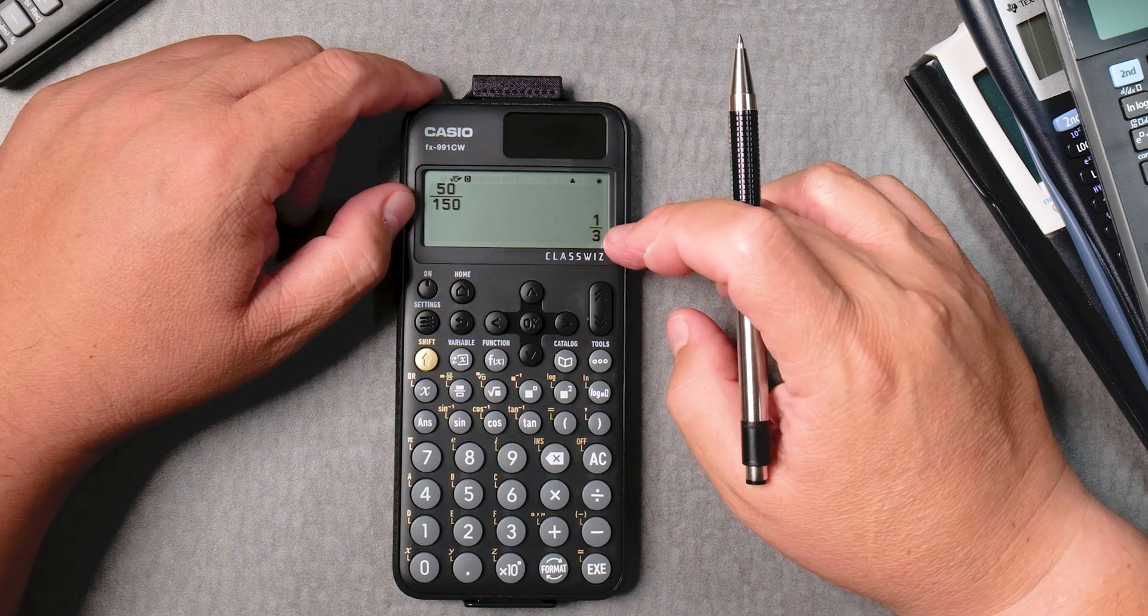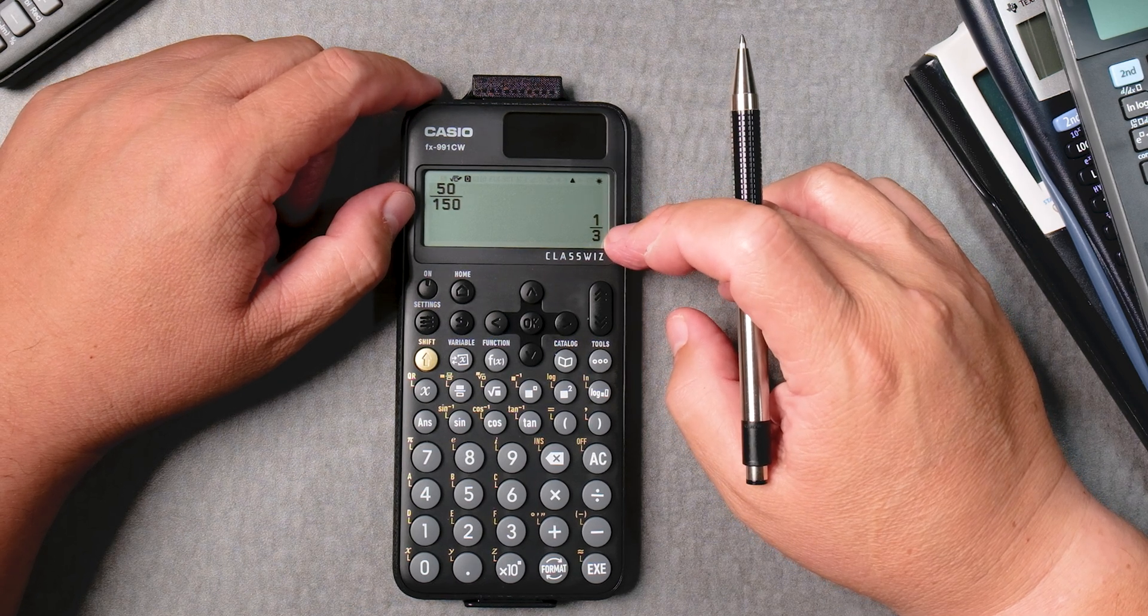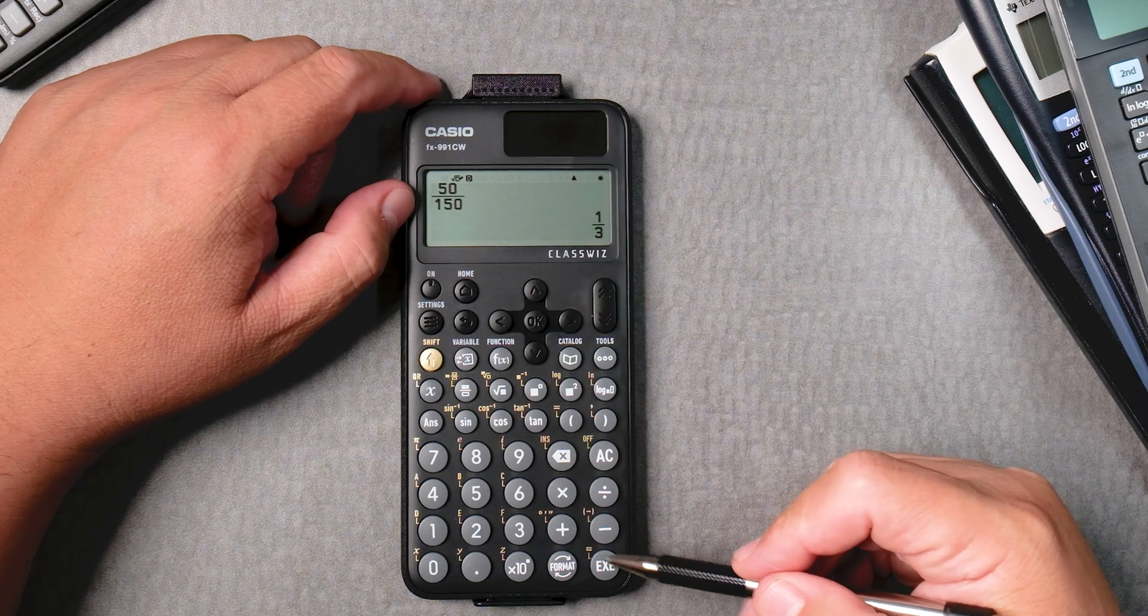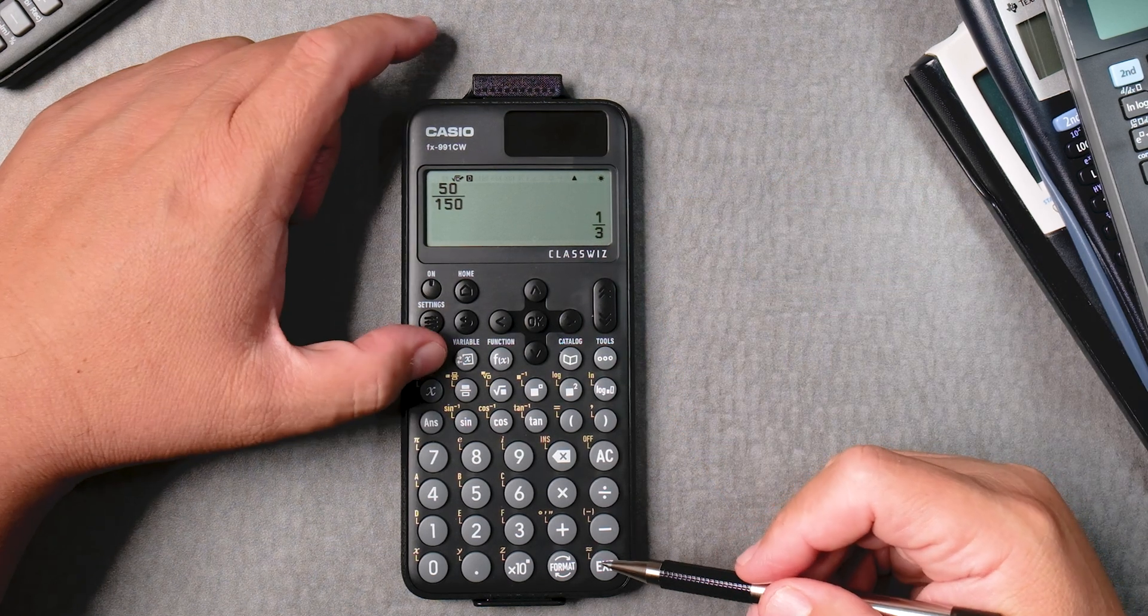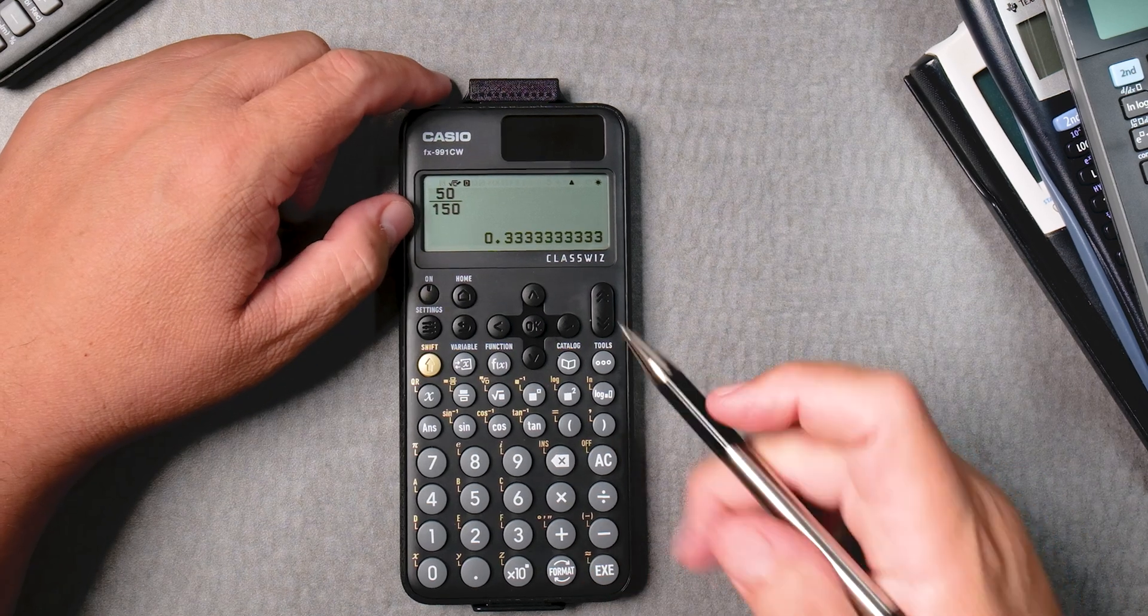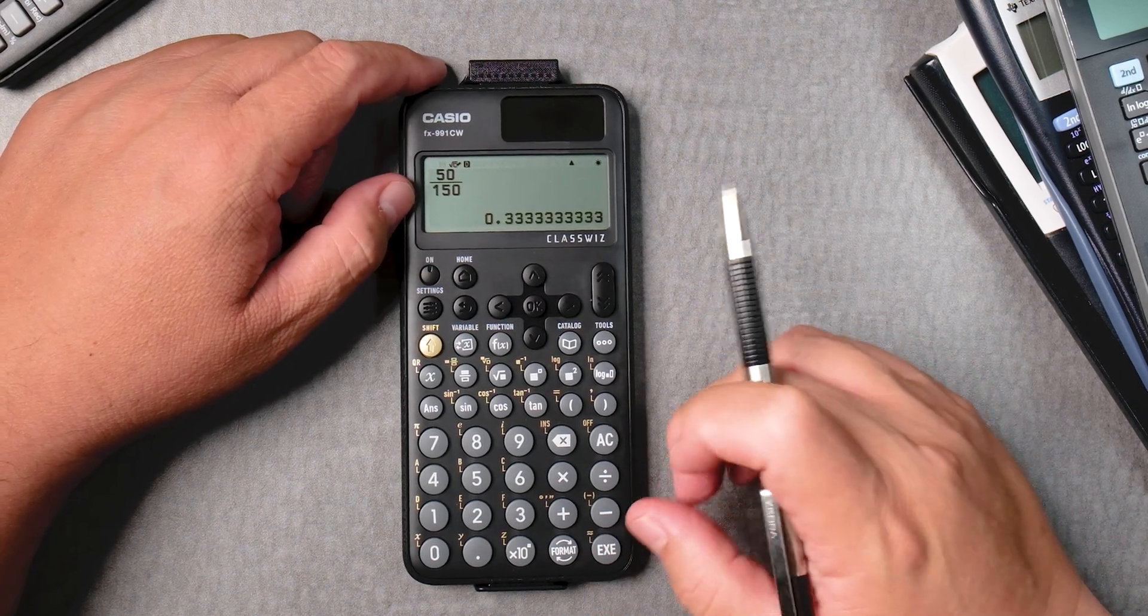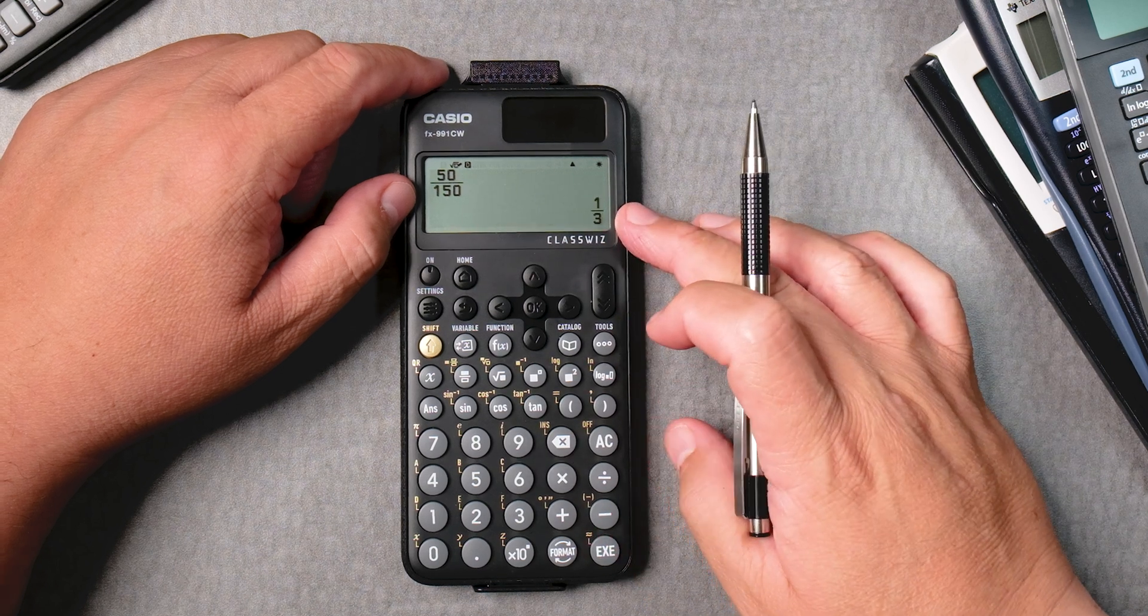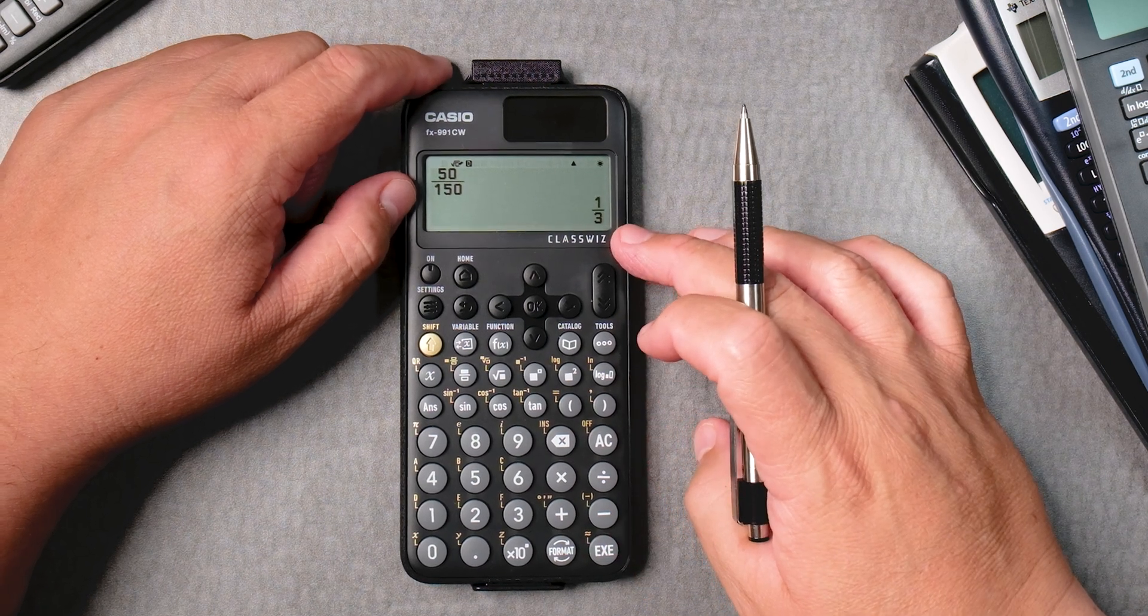I want this one third to be a decimal. Then what you can do is next to the exe there is a squiggly lines. Shift, squiggly lines gives you the decimal, and if you press exe it brings you back to a fraction. Nice.